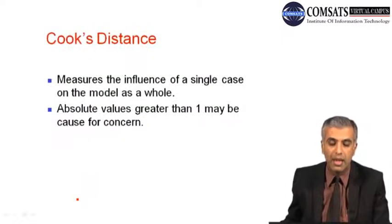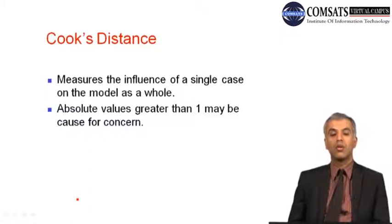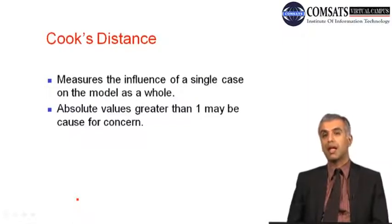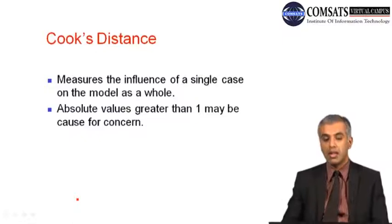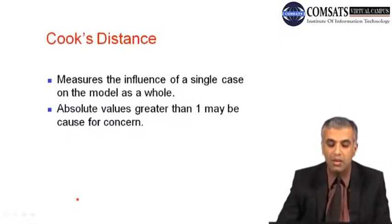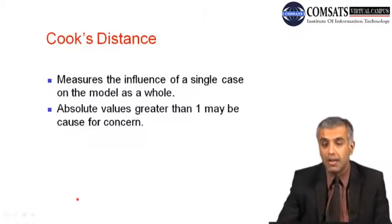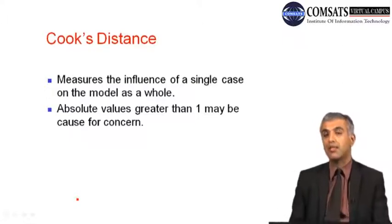We discussed Cook's distance, which measures the influence of a single case on the model as a whole. In order to know the impact of a single case on the whole model, we discussed the end values. If the value is greater than 1 in Cook's distance, then we have an abnormality in our data, and we have to look for that specific case to see what is the reason behind it.